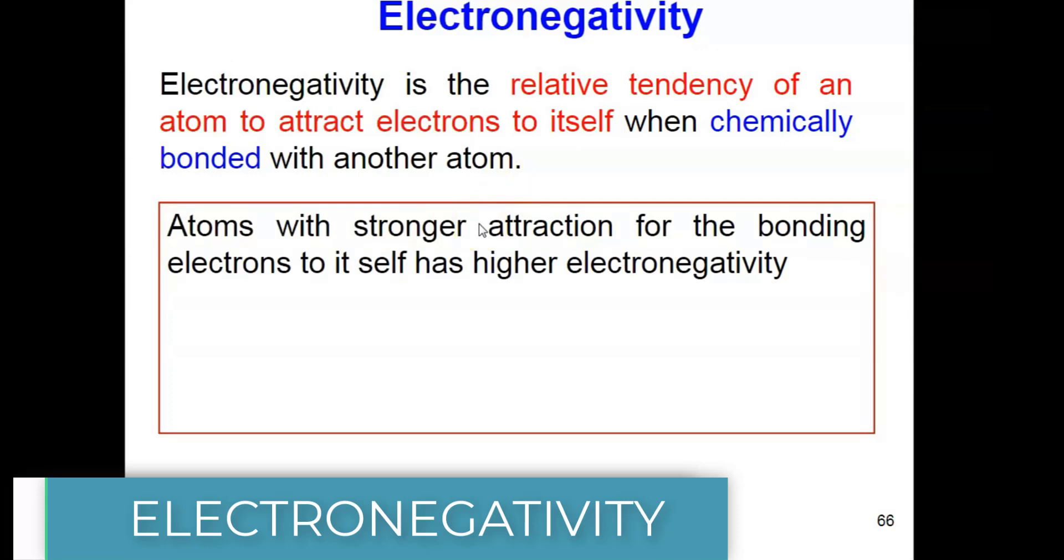Now, we know what electronegativity is, but can electronegativity be measured? And how do we measure electronegativity? Electronegativity is measured using something that we call Pauling's scale. The scale is invented by chemist Linus Pauling.